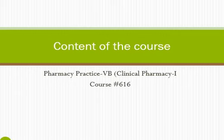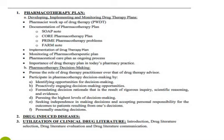Before starting the course, we will first discuss the content that will be covered during the whole semester. The course has several major sections. The major section is the pharmacotherapy plan — how the pharmacist handles the pharmacotherapy plan, making a plan for the patient. Then there are various subsections, followed by drug-induced diseases and utilization of clinical drug literature.